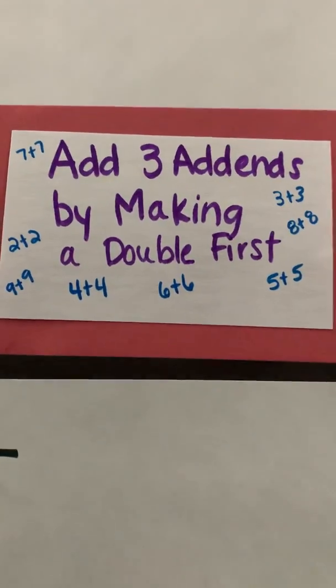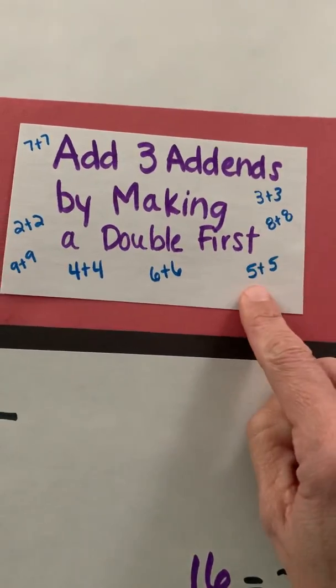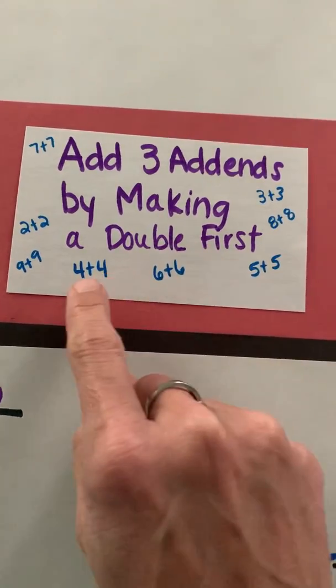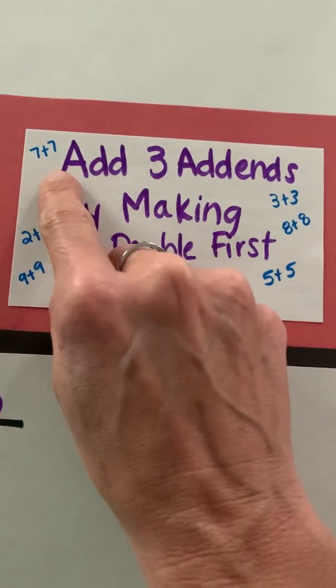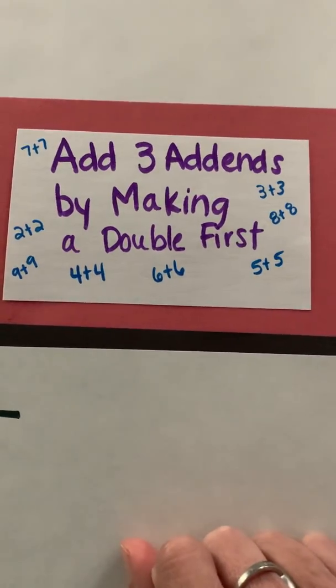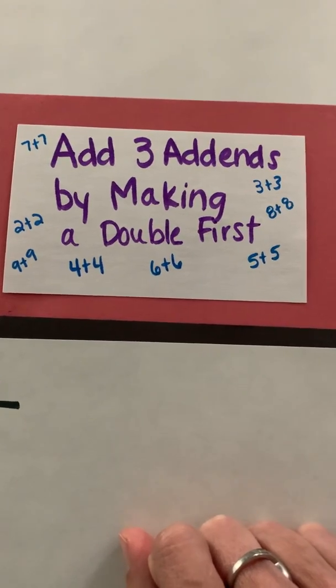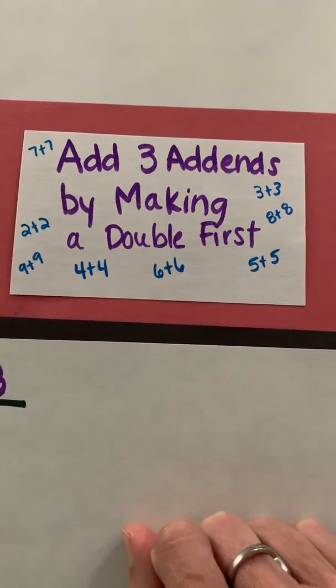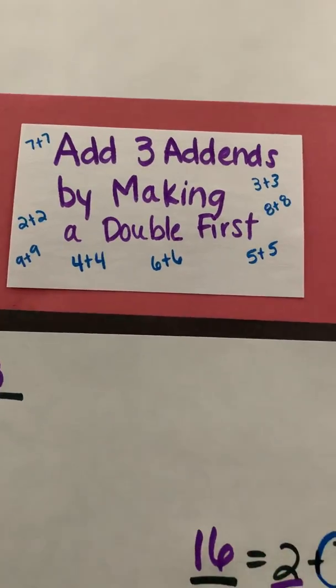All right, so take a good look at all these doubles again: 3 plus 3, 8 plus 8, 5 plus 5, 6 plus 6, 4 plus 4, 9 plus 9, 2 plus 2, and 7 plus 7. So now what you're going to do is you're going to go and try to solve some on your own. Remember, look for the doubles first and add those together first. Then you finally add on the third addend. Good luck.